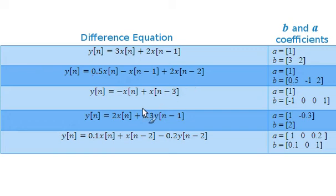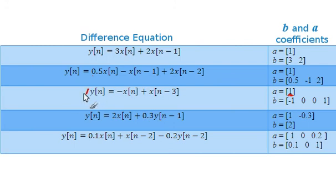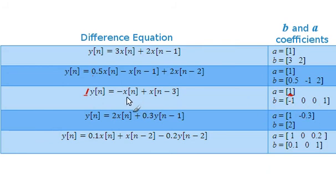The third example is slightly different. We again have only one Y term, so one A coefficient with a value of 1. However, we have four B coefficients even though only two X terms are explicitly shown in the difference equation.